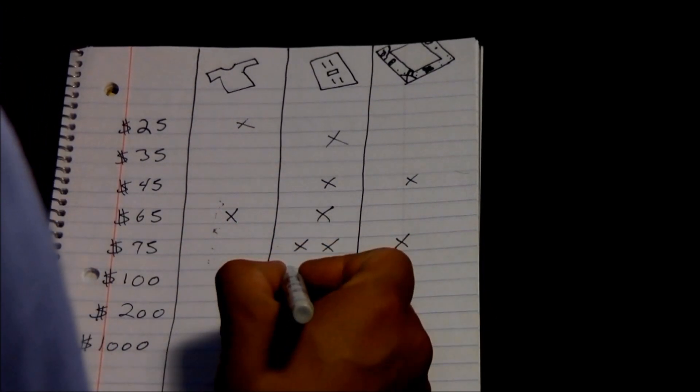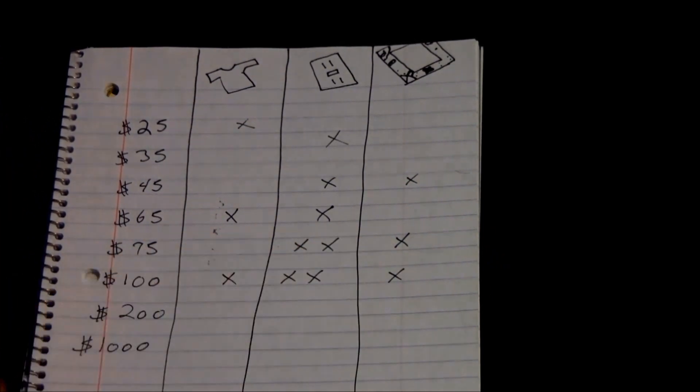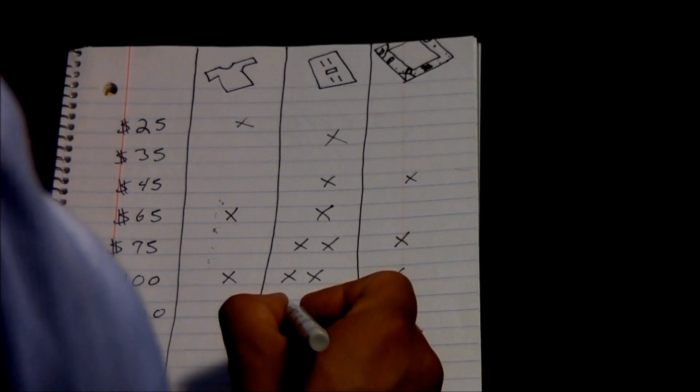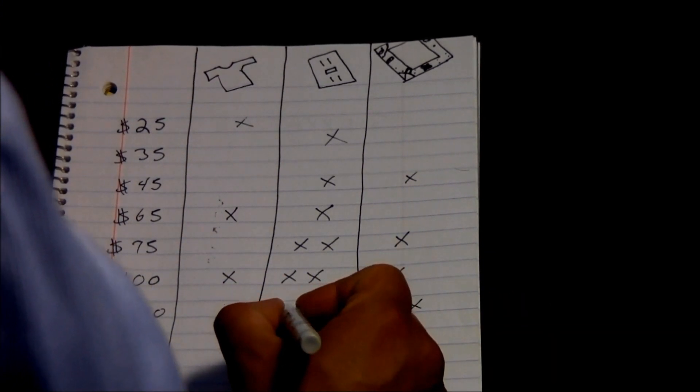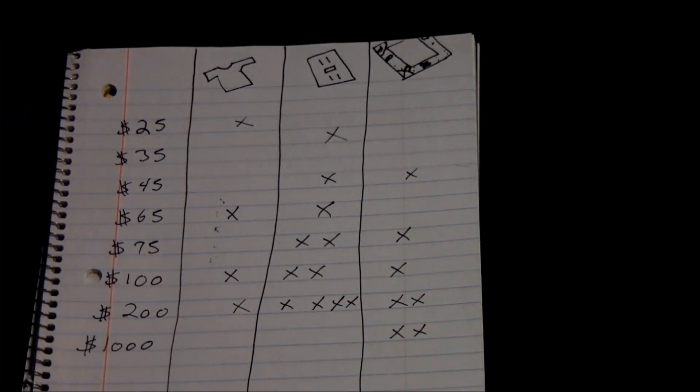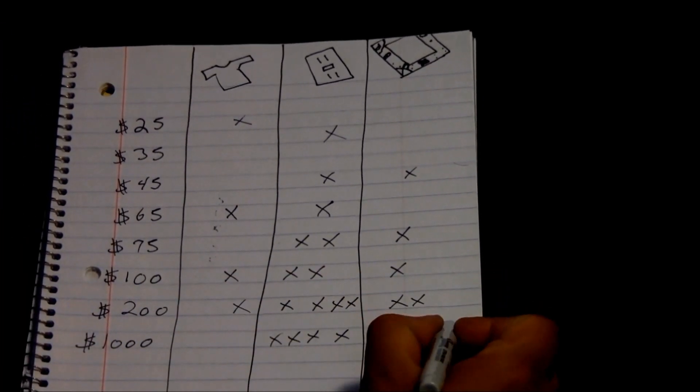For $100, you'll be receiving one customized faceplate, two electrical outlets and one t-shirt. For $200, you'll be receiving four electrical outlets, two faceplates and one t-shirt. And for $4,000, you'll get four of everything and be mentioned on my website as the most important backer for my project.